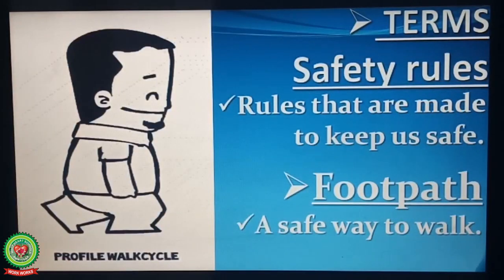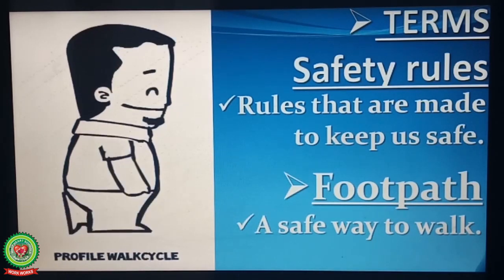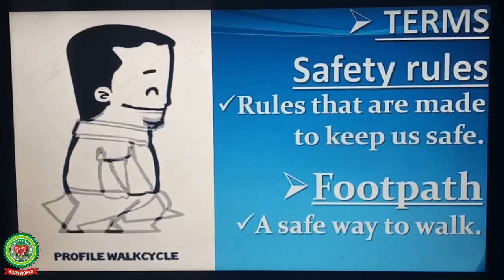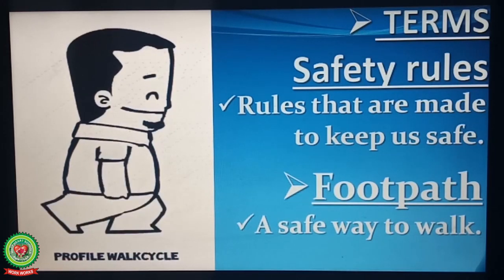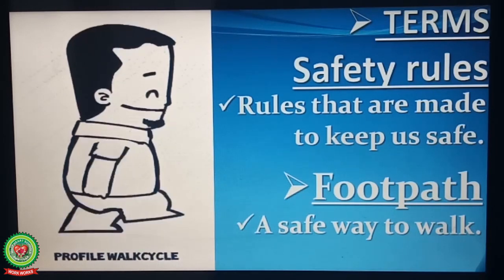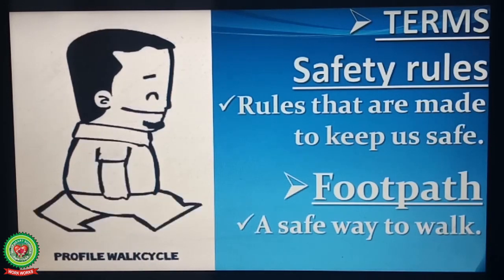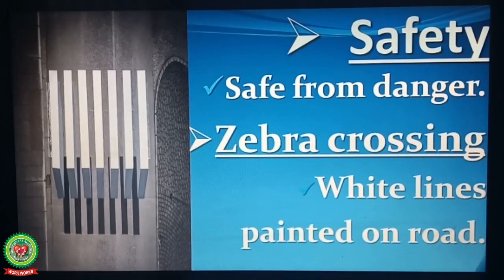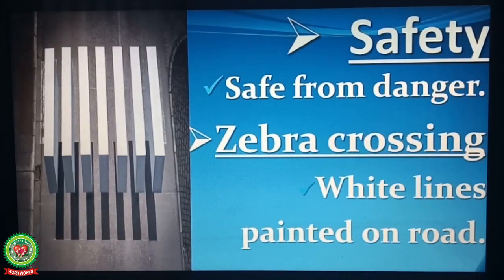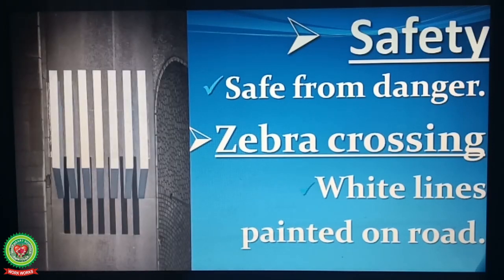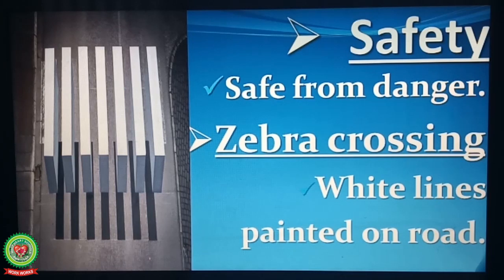Let us discuss some important terms of this chapter. Number one: safety rules — rules that are made to keep us safe. Number two: footpath — a safe way to walk. Number three: safety — safe from danger. Number four: zebra crossing — white lines painted on road.